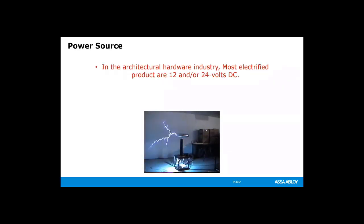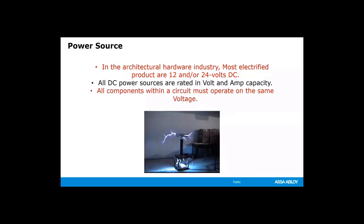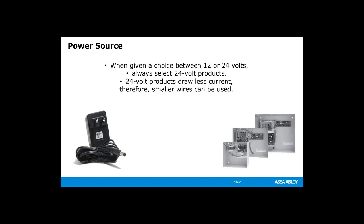In the architectural hardware industry, most electrified products are either going to be 12 or 24 volts DC. All DC power supplies are going to be rated in volts and amp capacity. All components within a circuit must operate at the same voltage or the same voltage range — that's extremely important. When given a choice between 12 and 24 volts, always select 24 volts. 24 volts requires less current, so you can use smaller wires. A 24-volt power supply will also require a lower amp capacity.